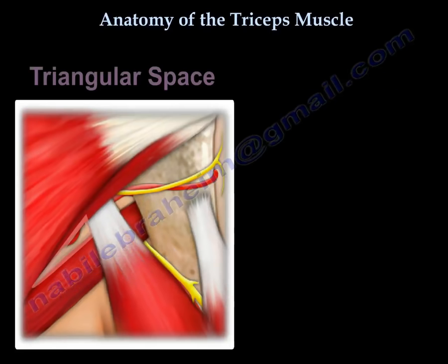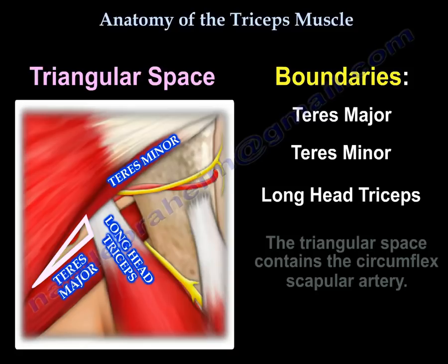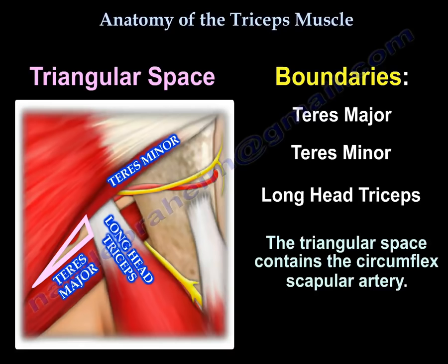Another space is called the triangular space. Its boundaries are the teres major, the teres minor, and the long head of the triceps. It contains the circumflex scapular artery.